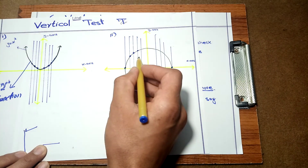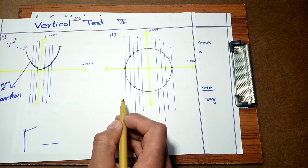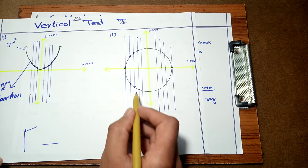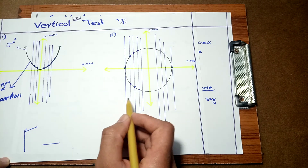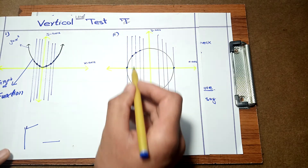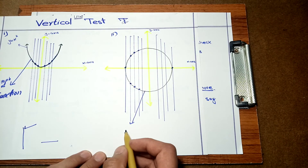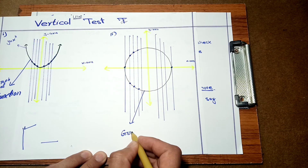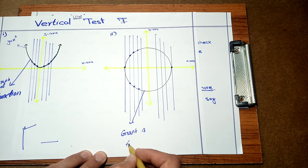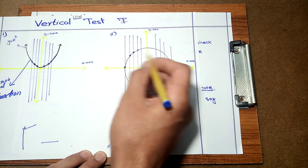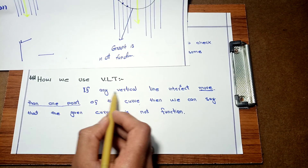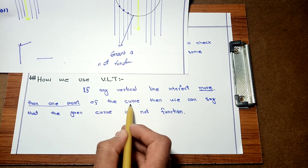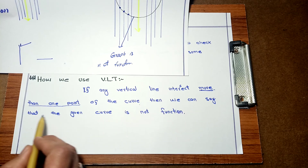If you get at least one vertical line which intersects more than one point — and here you can find infinite such vertical lines — then we can say this is not a function. The main point is: if any vertical line intersects more than one point of the curve, then the given curve is not a function.